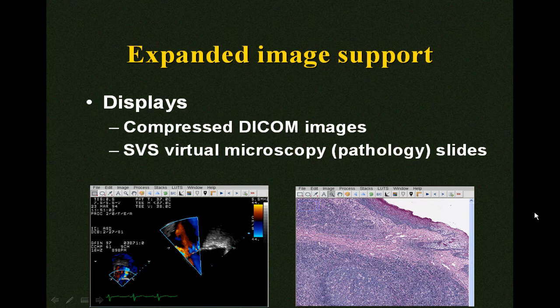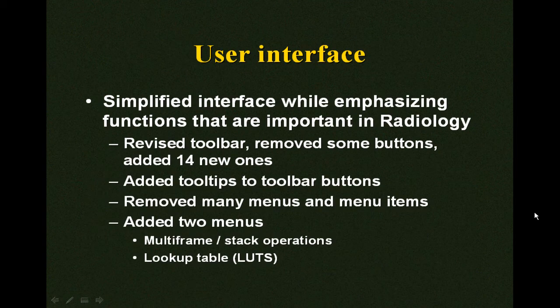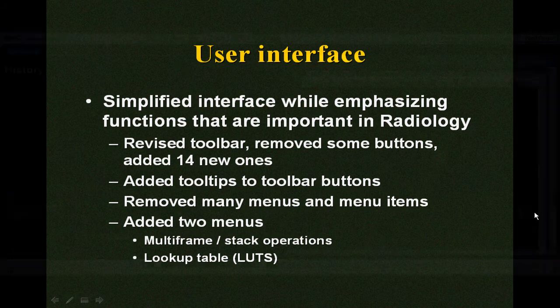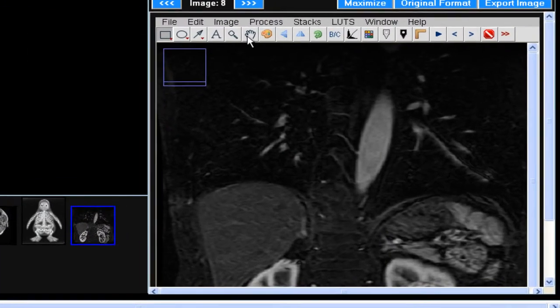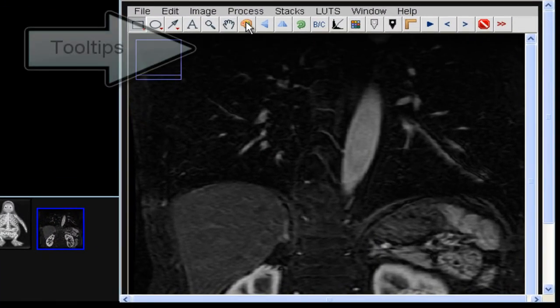The viewer now displays compressed DICOM images and SVS virtual microscopy slides. Major changes were made to the ImageJ user interface, focused on simplifying the design by removing features that are inappropriate for applet deployments and by emphasizing those that are important in radiology. The applet is shown here running in a Merck teaching file case. Tooltips were added to the buttons in the toolbar.